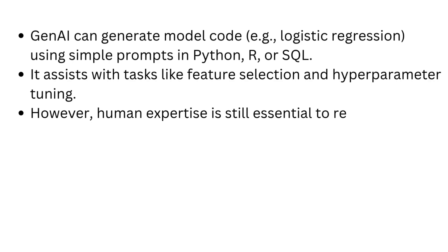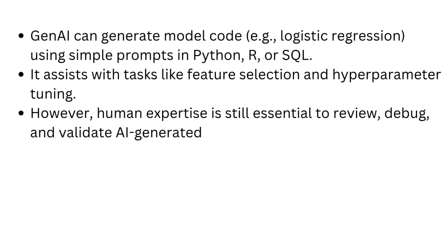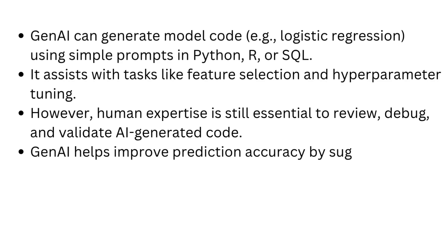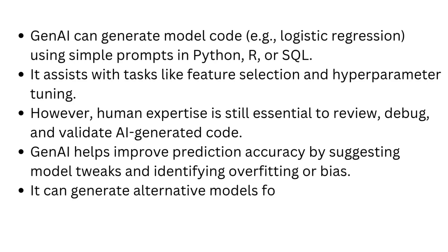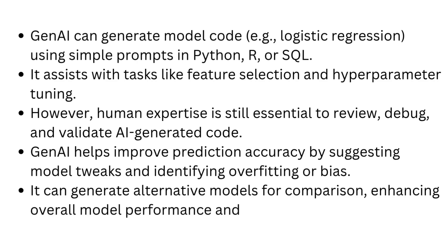However, human expertise is still essential to review, debug, and validate AI-generated code. Gen AI helps improve prediction accuracy by suggesting model tweaks and identifying overfitting or bias. It can also generate alternative models for comparison, enhancing overall model performance and fairness.